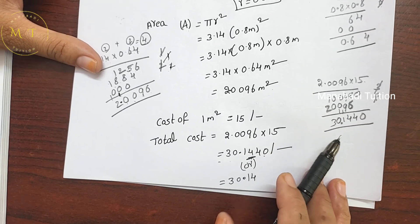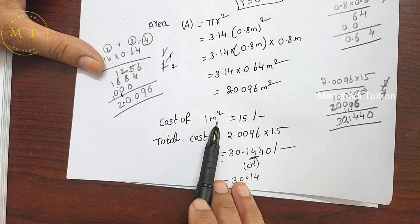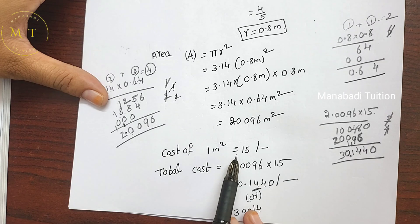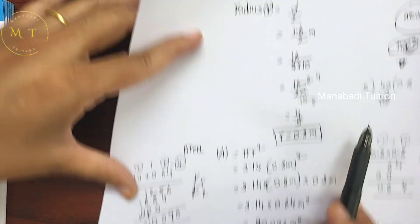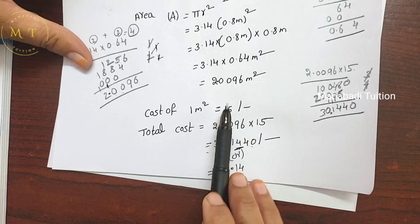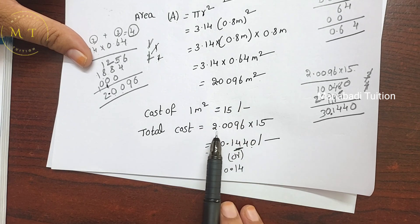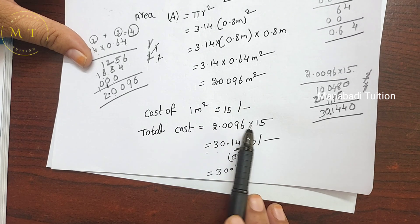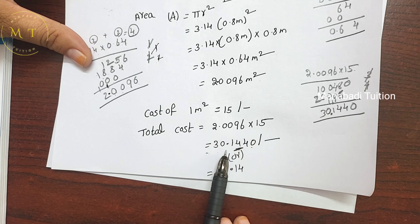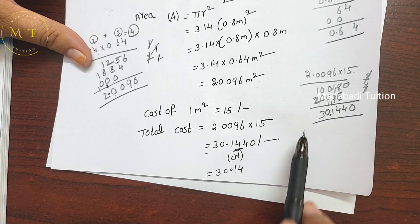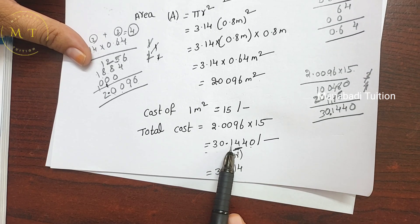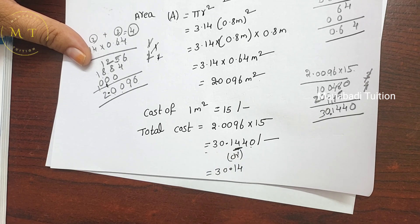The cost of 1 square meter is 15 rupees. So total cost equals 2.0096 multiplied by 15, which gives 30.1440, approximately 30.14 rupees.